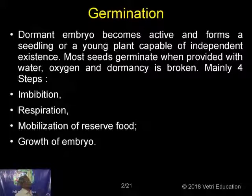Before proceeding to seed germination proper, let me give you some idea about the structure of the seed, so you will understand it better. How is a seed produced? A seed comes only from an ovule, and that ovule is present inside the ovary. After fertilization, the ovary becomes a fruit and the ovule becomes a seed. To study seed germination in detail, you must know the structure of the seed, and for that, you must know the structure of the ovule.